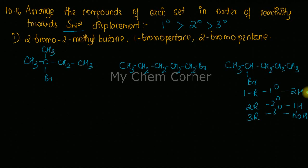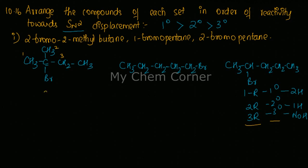Now let's classify the first compound. Looking at the carbon bonded to the halogen in 2-bromo-2-methylbutane, that carbon is bonded to three alkyl groups, and has no hydrogens at all. This means it falls under the tertiary category — so this alkyl halide is a tertiary alkyl halide.